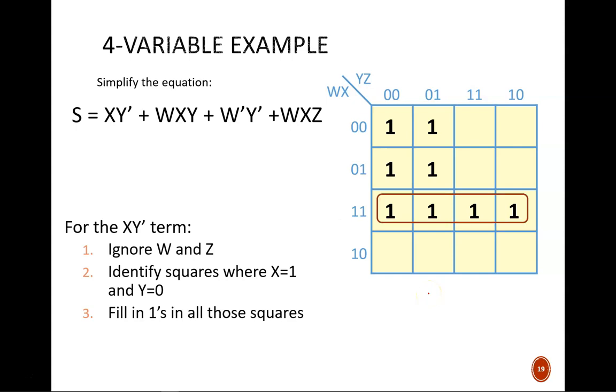After filling in the k-map, we identify these two groups of four. The brown group gives us the product term WX, and the purple group gives us W'Y'. So here is the final equation.